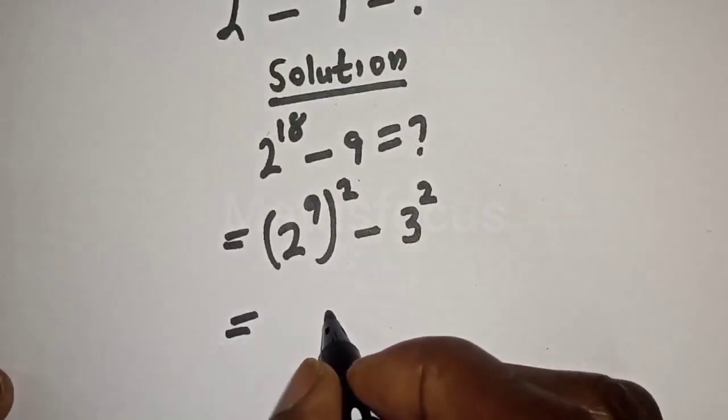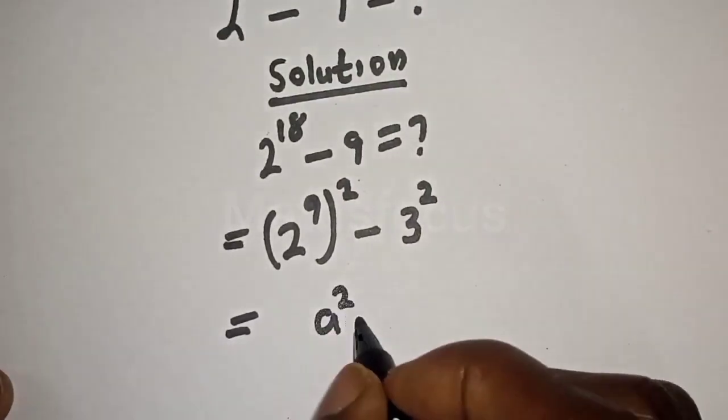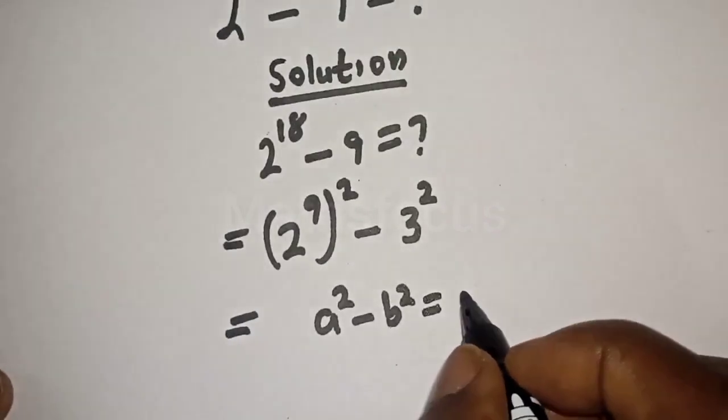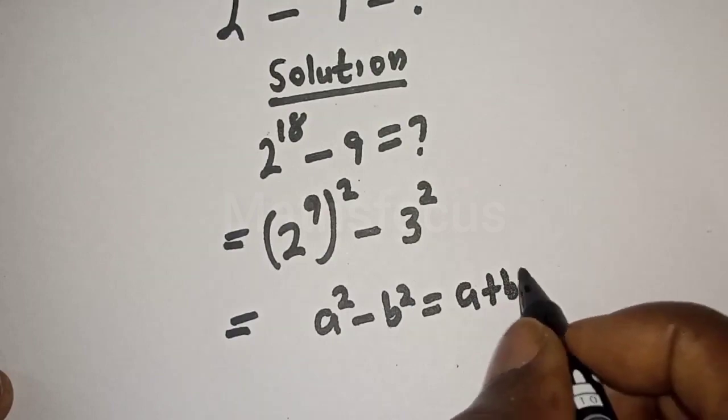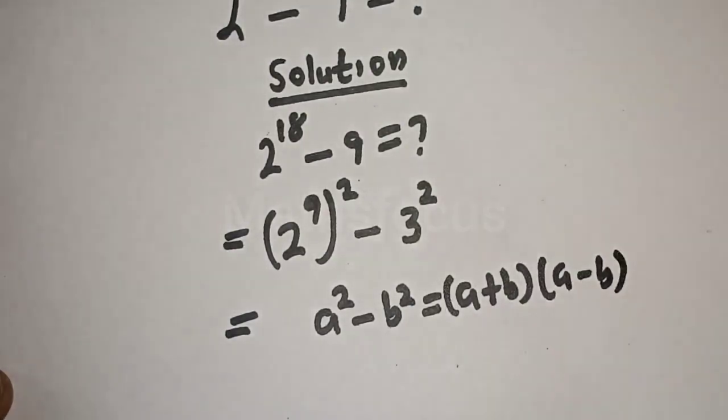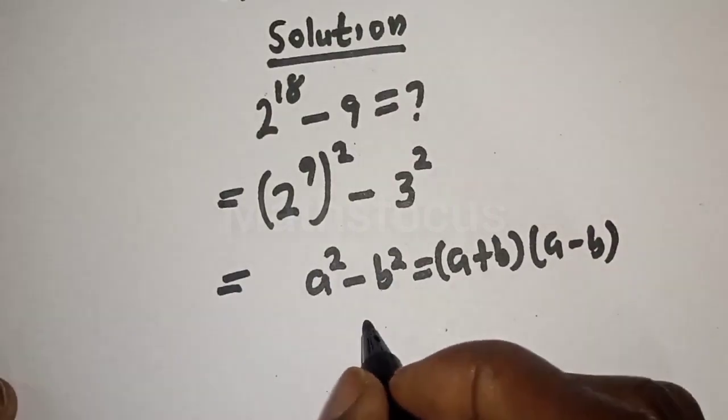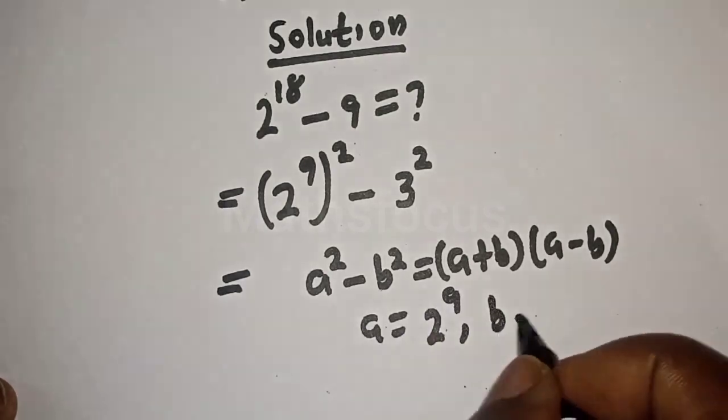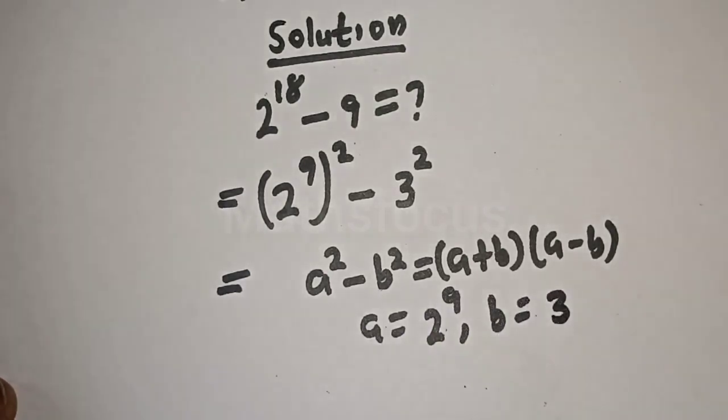This is equal to - take note of this rule - if you have a squared minus b squared, this is equal to a plus b bracket a minus b, where a is equal to 2 raised to power 9 and b is equal to 3.